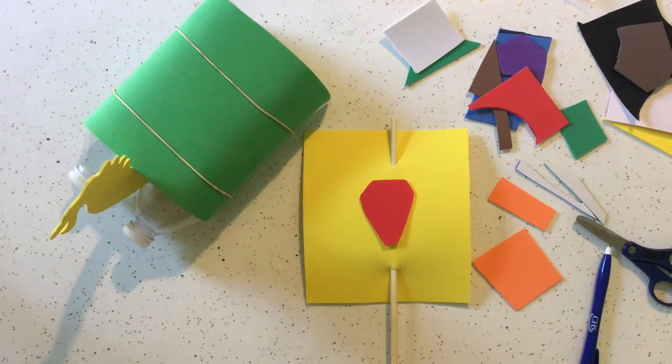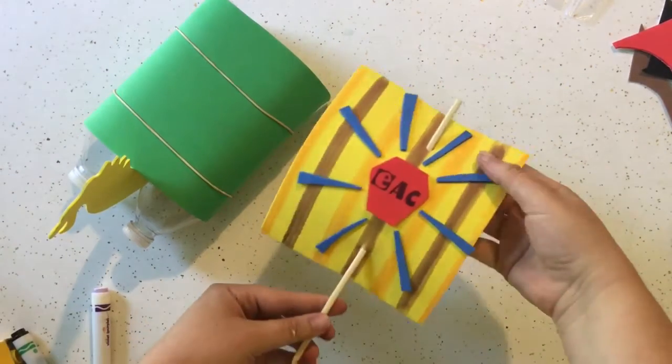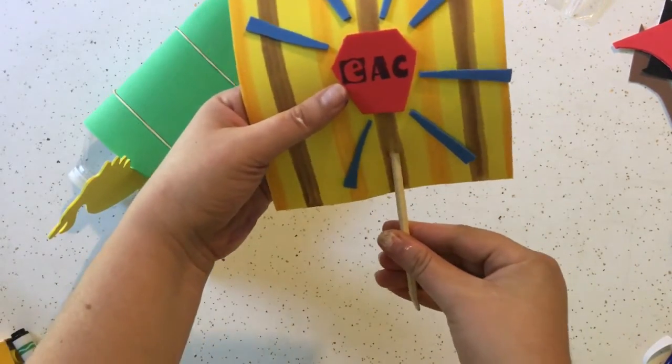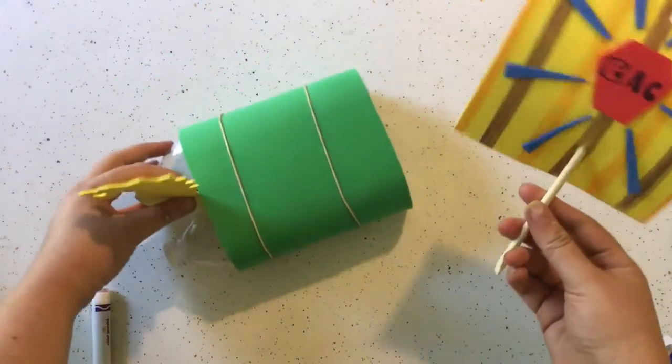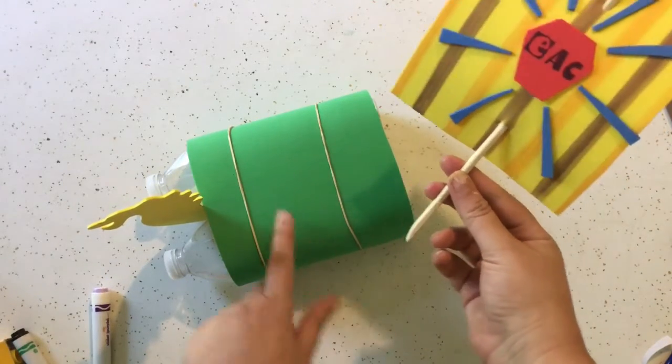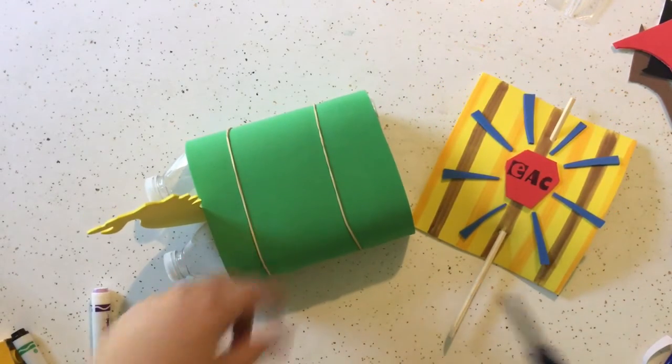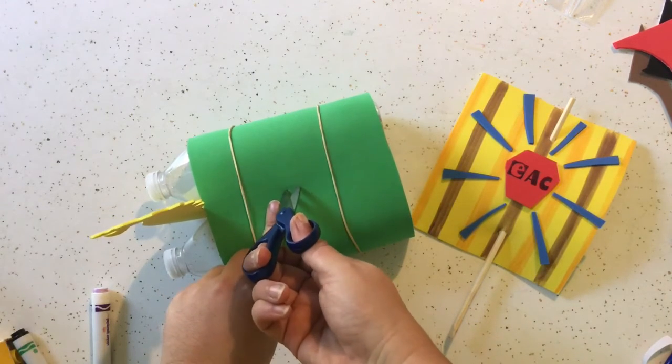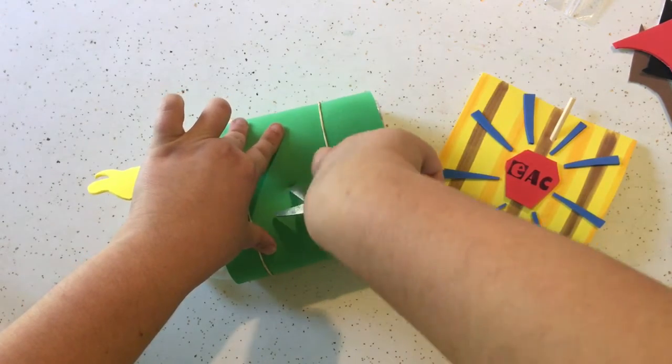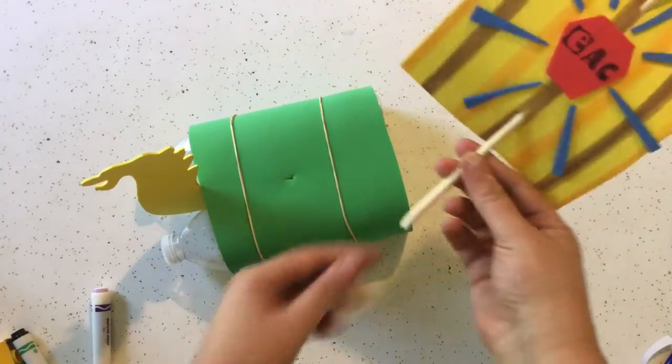When your sail is all decorated, now we need to mount it onto our boat. This mast, the wooden stick part of our sail, is going to poke through this layer of foam right here. So what you need to do is grab your scissors and give that a little tiny snip like we did before in our sail. Just poke that through, be very careful.